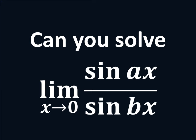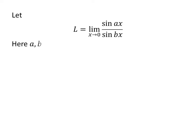In this video, we will learn to find the limit of sin of a times x upon sin of b times x as x approaches 0. Let us assume l is the limit of sin of a times x upon sin of b times x as x approaches 0. Here a and b are not equal to 0.